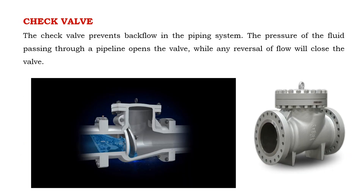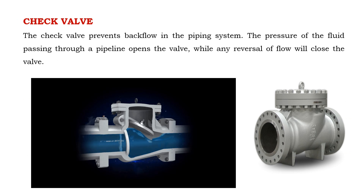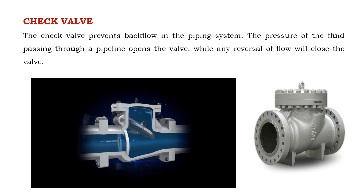The check valve prevents back flow in the piping system. The pressure of the fluid passing through a pipeline opens the valve, while any reversal of flow will close the valve.